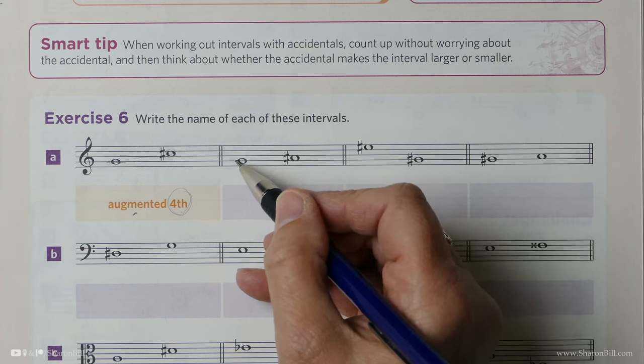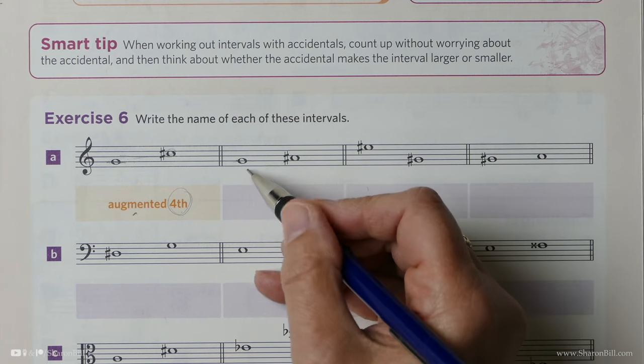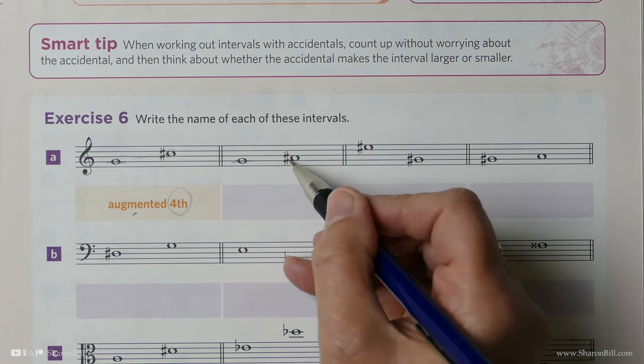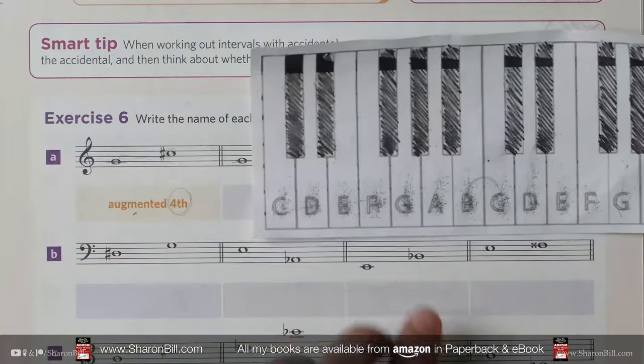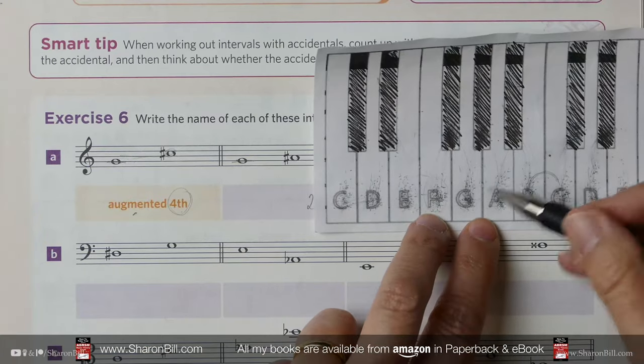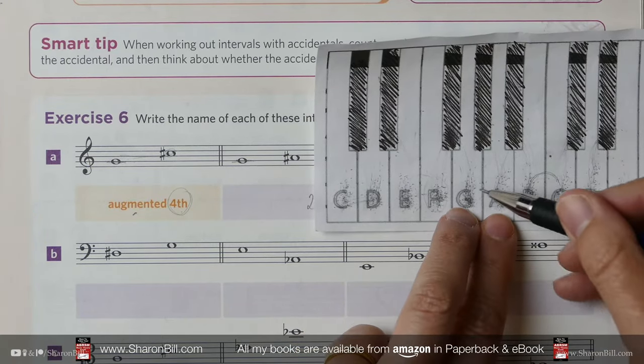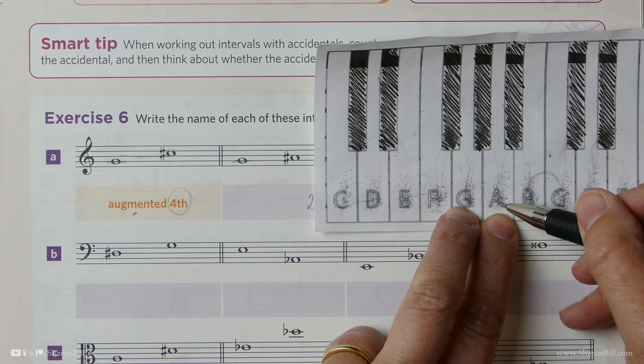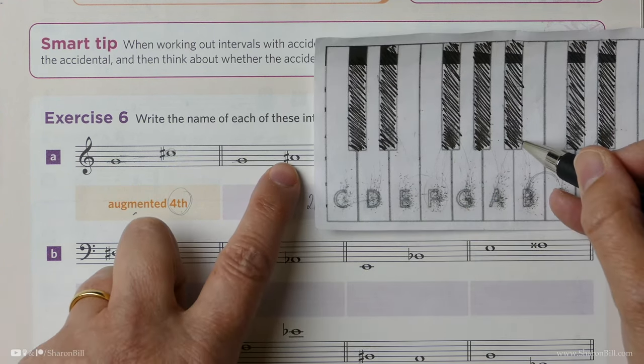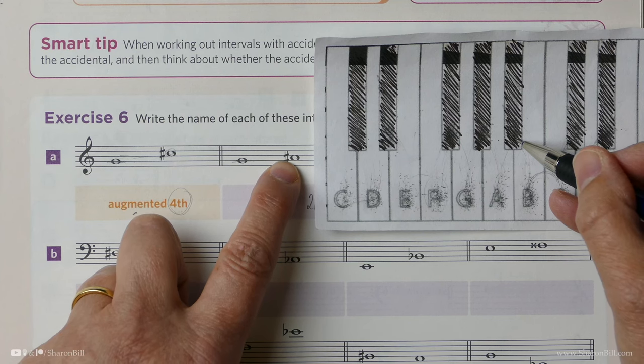So here we have a G to an A, which is a second, one, two. It's a second of some sort. Now we know that G to A natural is a full step. That's a major interval. That's a major second. But then, if we raise it again, we've made that major second bigger.